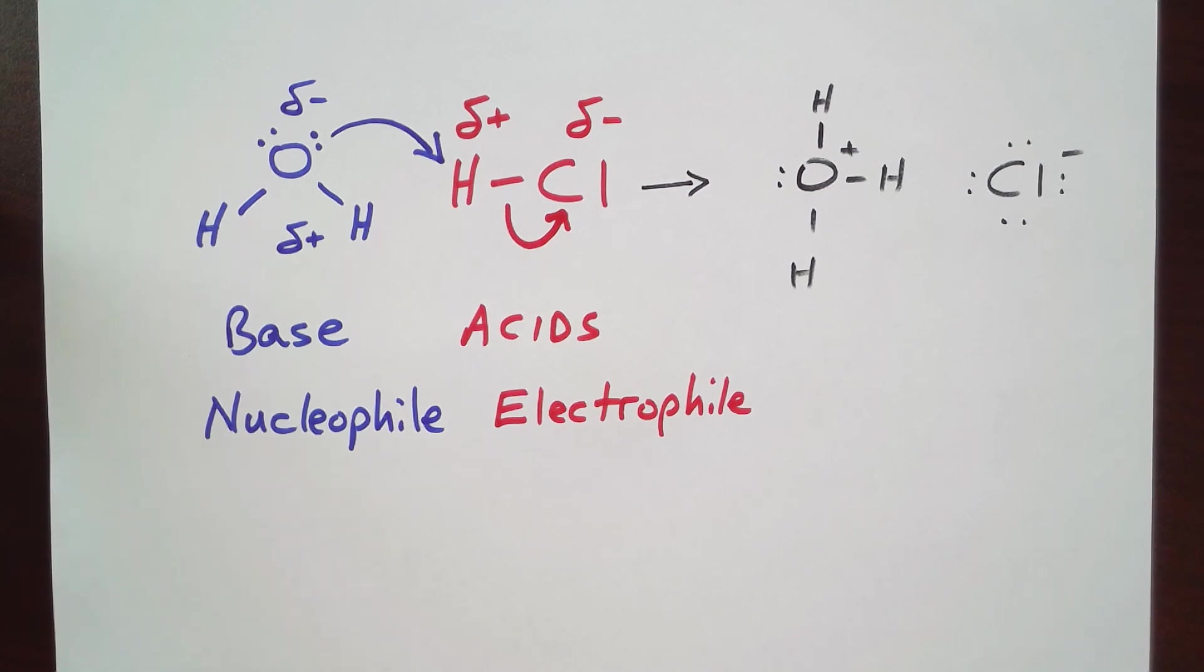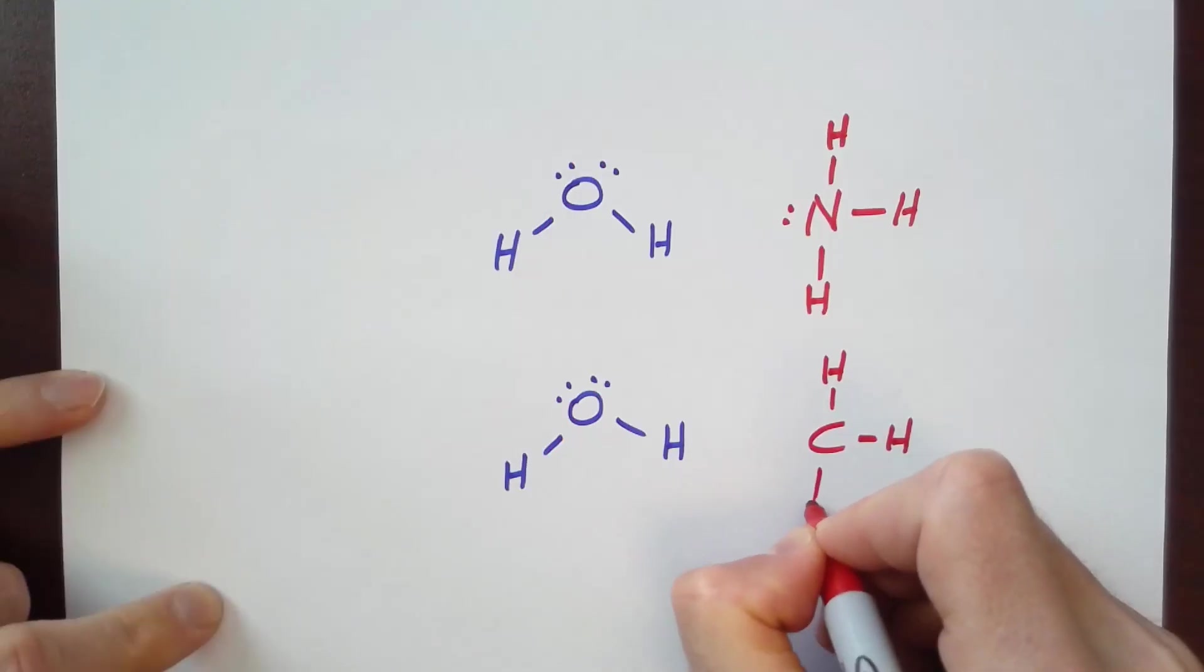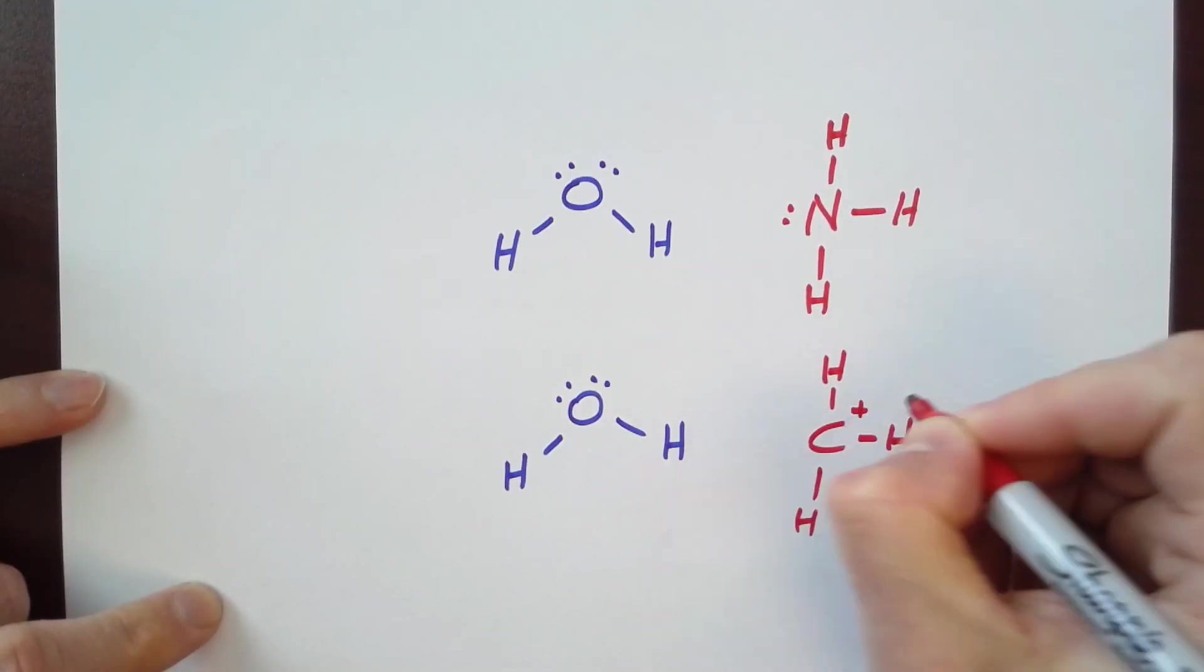Electrophiles, on the other hand, are electron deficient, and so we know that the hydrogen in HCl has a partial positive charge, and so it loves electrons. It wants electrons. And so in most of what we're going to be doing moving forward, we can classify things as nucleophiles and electrophiles.